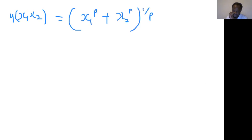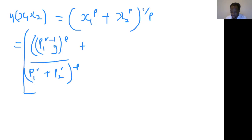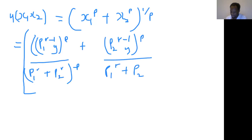When we substitute, we get: x1^φ = [P1^(R-1) · y]^φ / (P1^R + P2^R)^φ, plus x2^φ = [P2^(R-1) · y]^φ / (P1^R + P2^R)^φ, all raised to the power 1/φ.